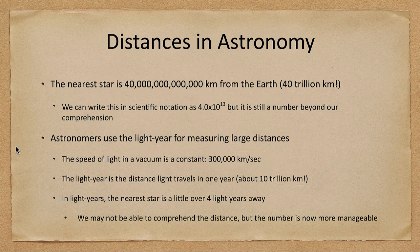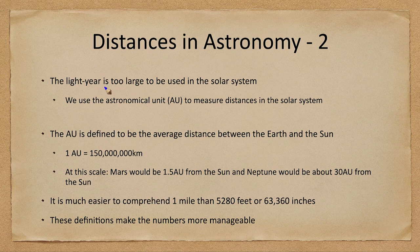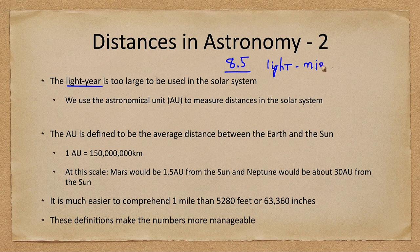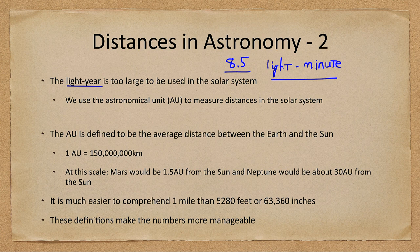The light year within our solar system is too big. The sun is about eight and a half light minutes away. A light year gets us well outside the solar system, so things within the solar system could use the light minute. We could talk about things being light minutes or even light seconds away for objects that are close. Typically within the solar system, though, we use what is called the astronomical unit.